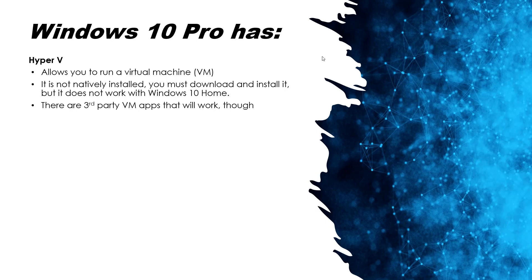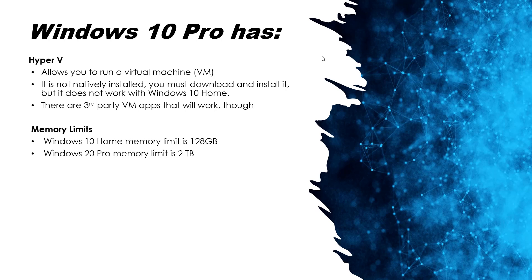Windows 10 Pro also has Hyper-V, which allows you to run a virtual machine, also known as a VM. A lot of people run VMs — it's not natively installed, you must download and install it, but it works well with Windows 10 Pro. It will not work with Windows 10 Home, though there are third-party VM apps that will. There are also memory limits: Windows 10 Home has a memory limit of 128 gigabytes, while Windows 10 Pro has a memory limit of 2 terabytes — a huge difference.